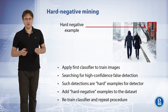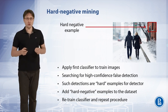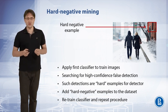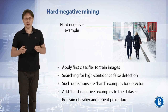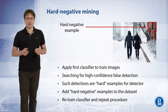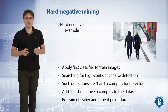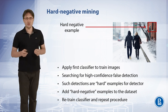The first detector is applied to training images. Our goal is to search for high-confidence false detections. Such detections are hard examples for the detector because it fails on them. We add these hard negative examples to the dataset, retrain the classifier, and repeat the procedure of hard negative mining.